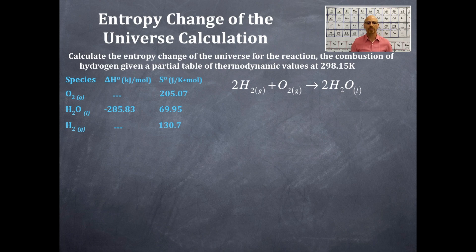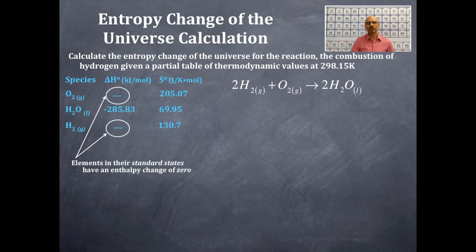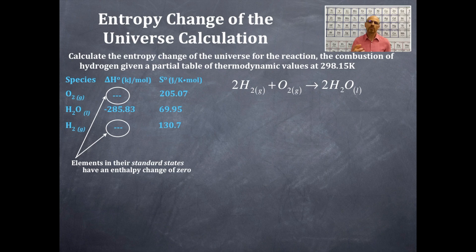Notice that the enthalpy and the entropy have different sets of units that we need to take care of. Also notice that the two elements in their standard state have enthalpy changes of zero — that's why they may show a zero value or not appear in the data table at all, depending on how it's organized.